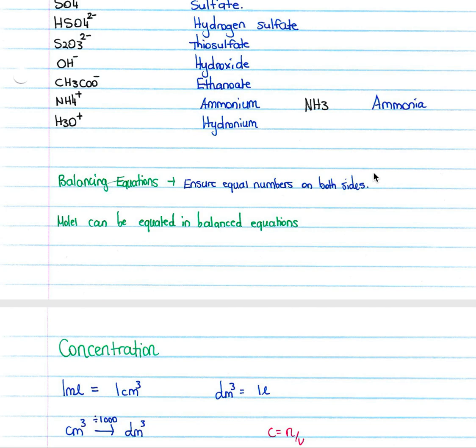So you just need to count up your moles on the left, count up your moles on the right and ensure that each element of that equation is equal on both sides. Then once you've got a balanced equation, you must always remember that your moles can be equated in your balanced equation, so when you're dealing with mole ratios you can use your mole ratios in a balanced equation.